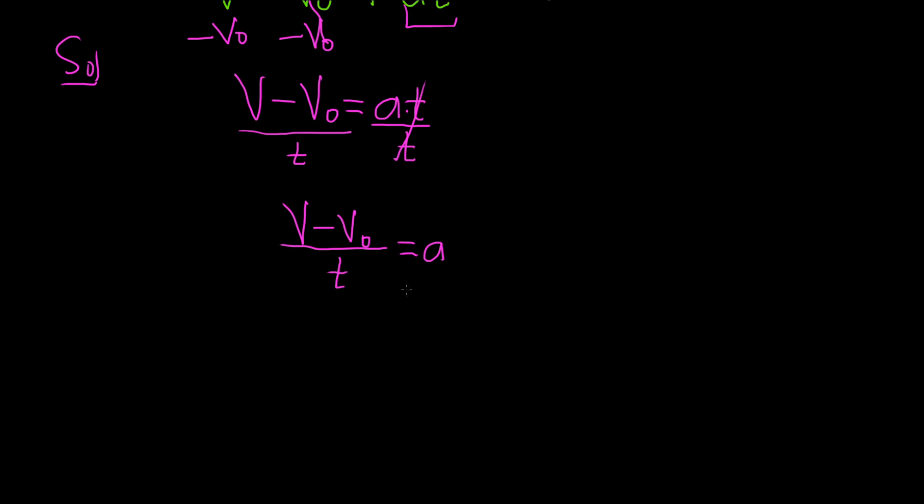It's maybe cleaner to write it on the left. So I'll write it like this: a equals v minus v sub zero over t. And that would be the final answer.